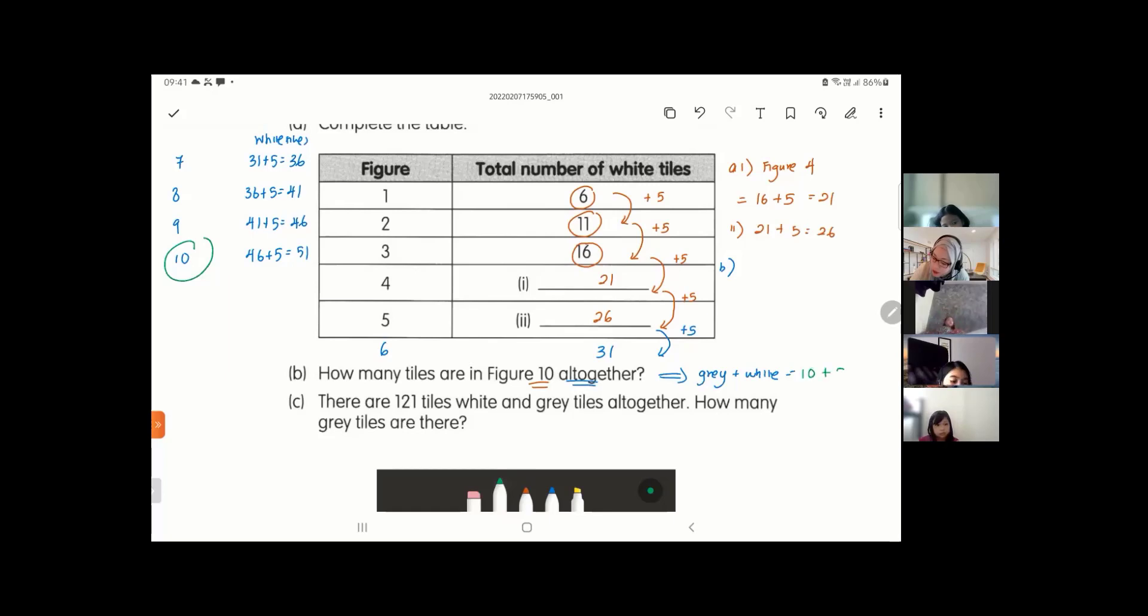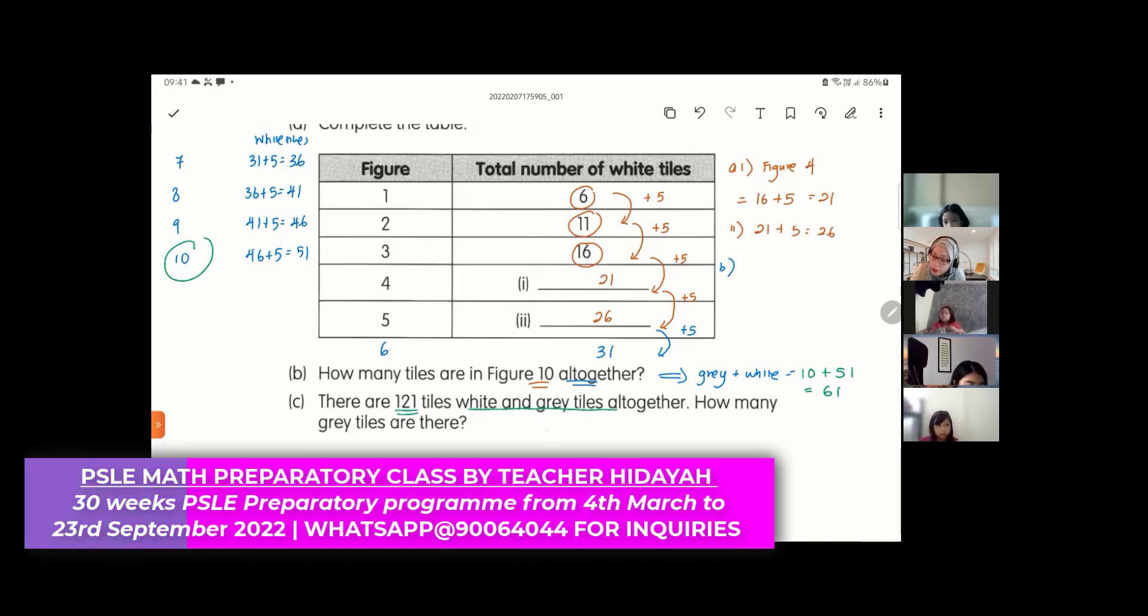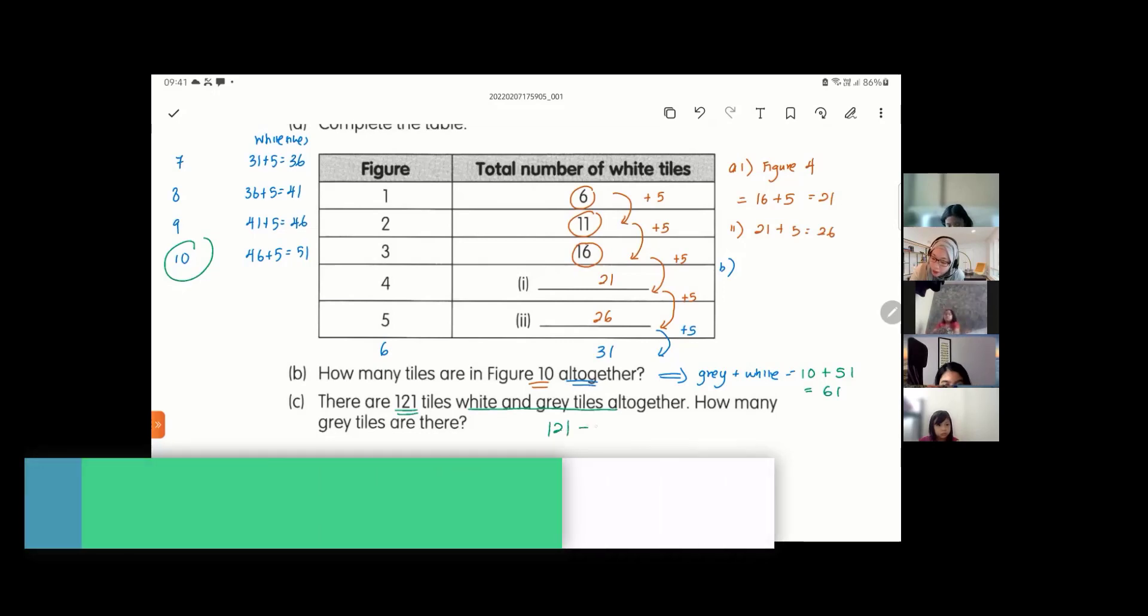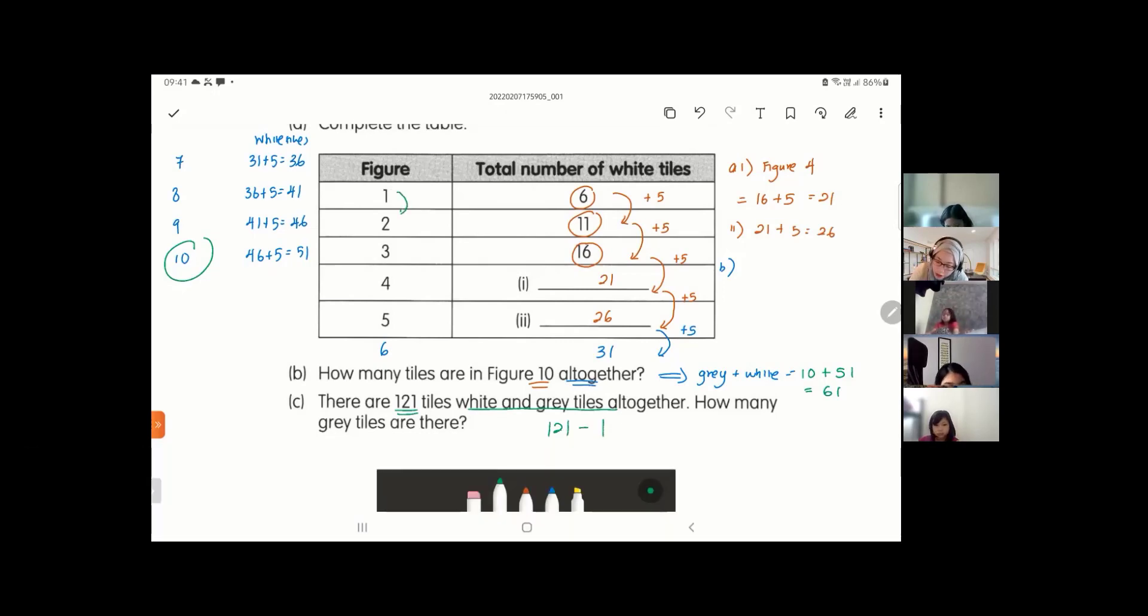Number C: There are 121 tiles, white and gray tiles altogether. How many gray tiles are there? So I want to find gray only. You take 121, you take away 1, because for each of the figures here, or each of the gray tiles, you increase by 1. So you take away 1, you get 120. Then 120 you divide by 6, because the starting of the white tiles is 6, you get 20. How many gray tiles are there? 20.